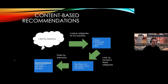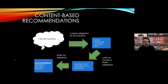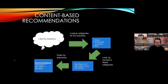Content-based means you use the metadata or the content itself to find similarities in your catalogue. For example, if I liked the movie Ex Machina, a system could look up what categories that movie contains — action, robots, sci-fi — and then look up similar movies with the same categories to produce recommendations based on similarity. Today you do that with embeddings more than with categories, but the concept is the same.